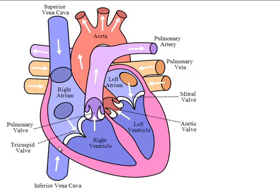Similar to what we saw in the right chambers — when the oxygenated blood from the lungs comes to the left atrium and passes to the left ventricle through the bicuspid or mitral valve, and when the heart contracts a second time, this oxygenated blood passes through the aortic valve to the different parts and organs of the body through the aorta. The aorta is the largest artery of the body; its other name is truncus arteriosus.